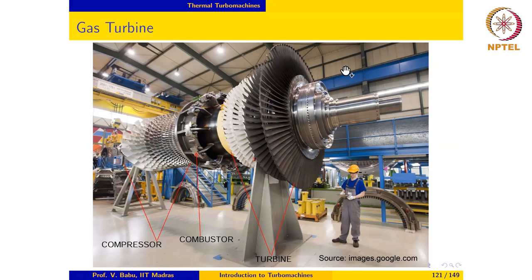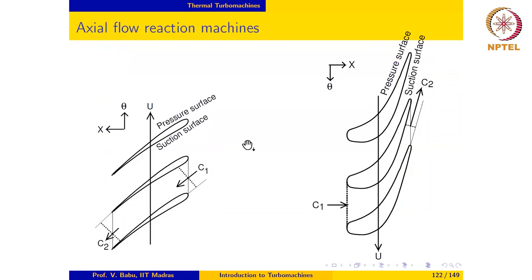Land-based gas turbine power generation units such as the one shown here typically operate at constant speed and constant load, so they more or less operate at the design operating conditions. Departures from design operating conditions are very rare and usually not allowed, so consequently these are very, very efficient.